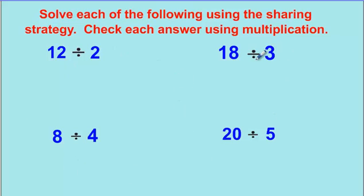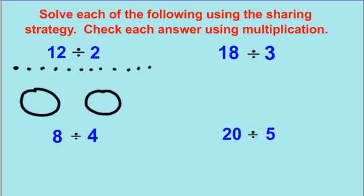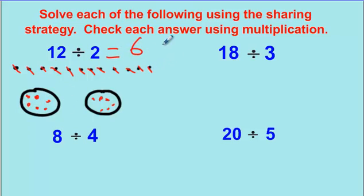Now I've got four problems — solve all of them. That should take about two to three minutes. Pause the video and go. Assuming you did that — for 12 divided by 2, draw twelve dots: 1 through 12. Share among two groups, putting one here and one there, back and forth. You get six in each group, so the answer is six. Check it: two times six is twelve. It works.